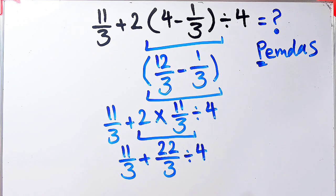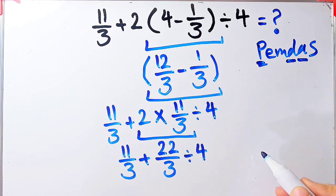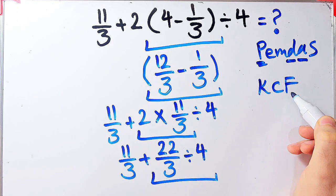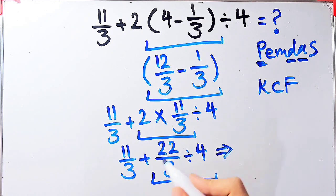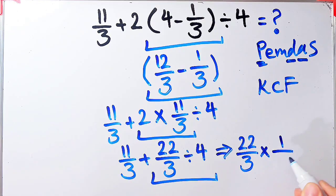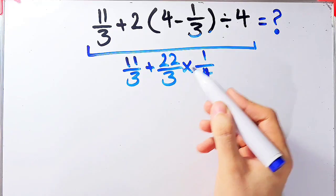Now we have addition and division. Division has higher priority than addition, so we simplify the division first using the KCF rule. We keep the first fraction as it is, change the sign, and flip the second number. Now the question is 11 over 3 plus 22 over 3 times 1 over 4.